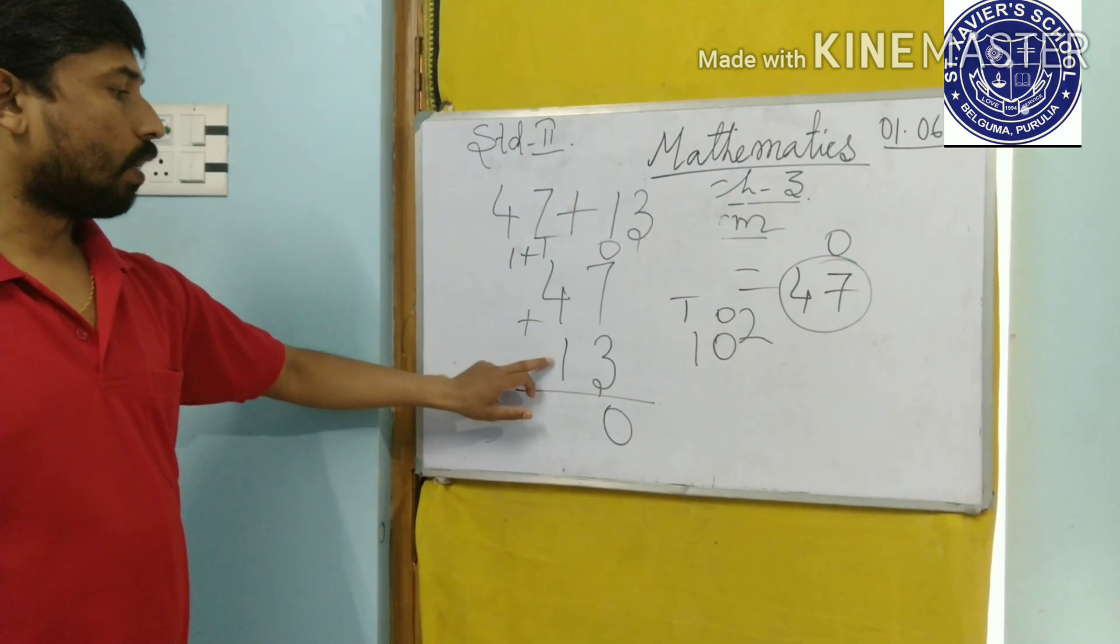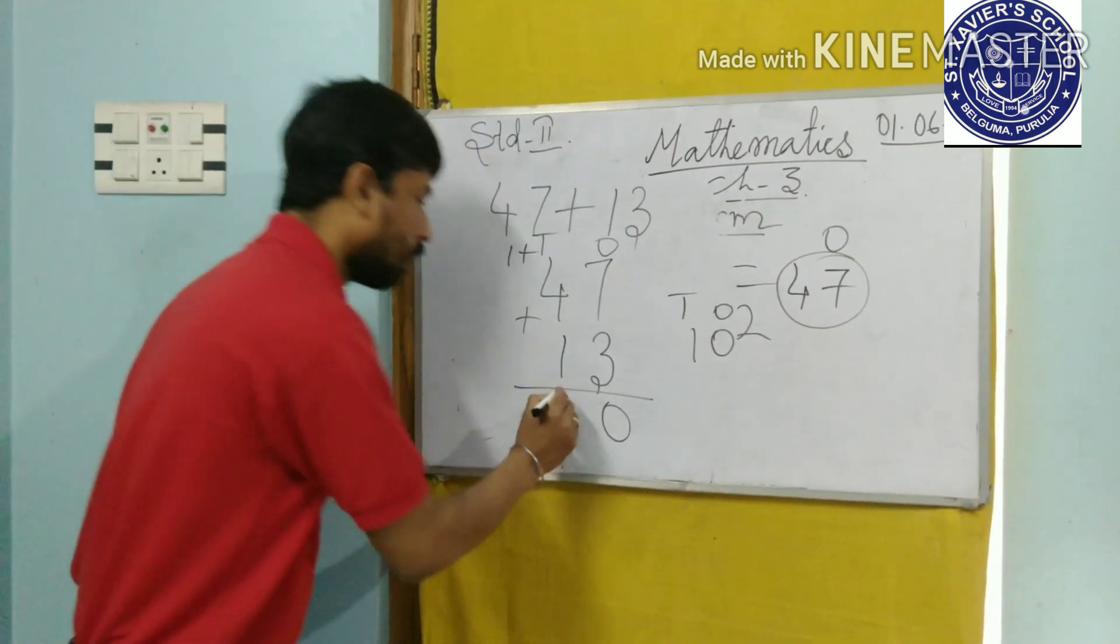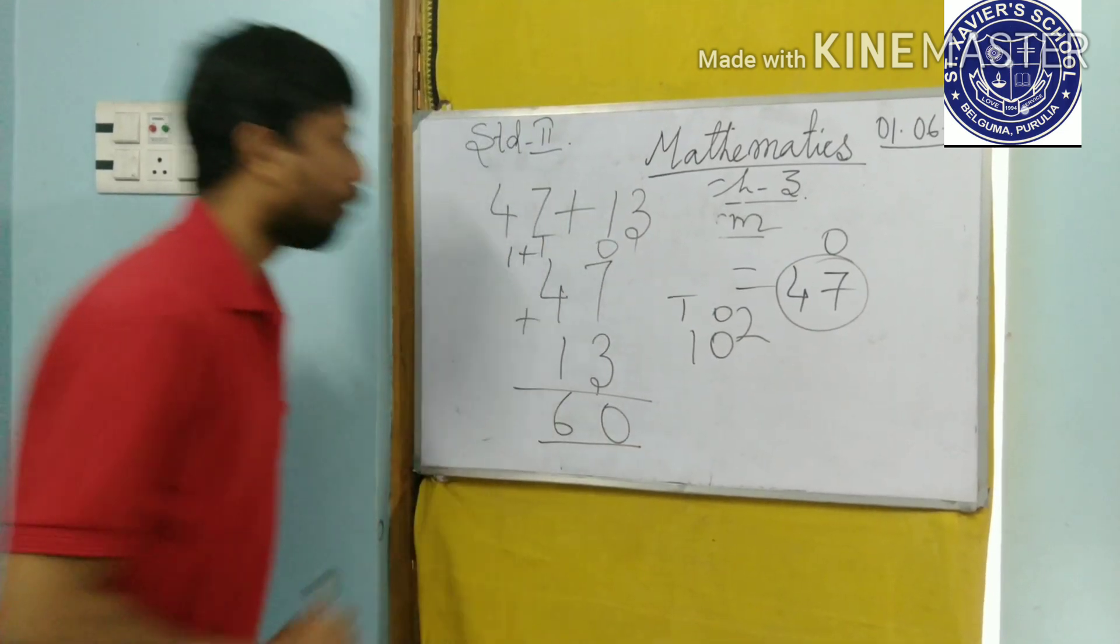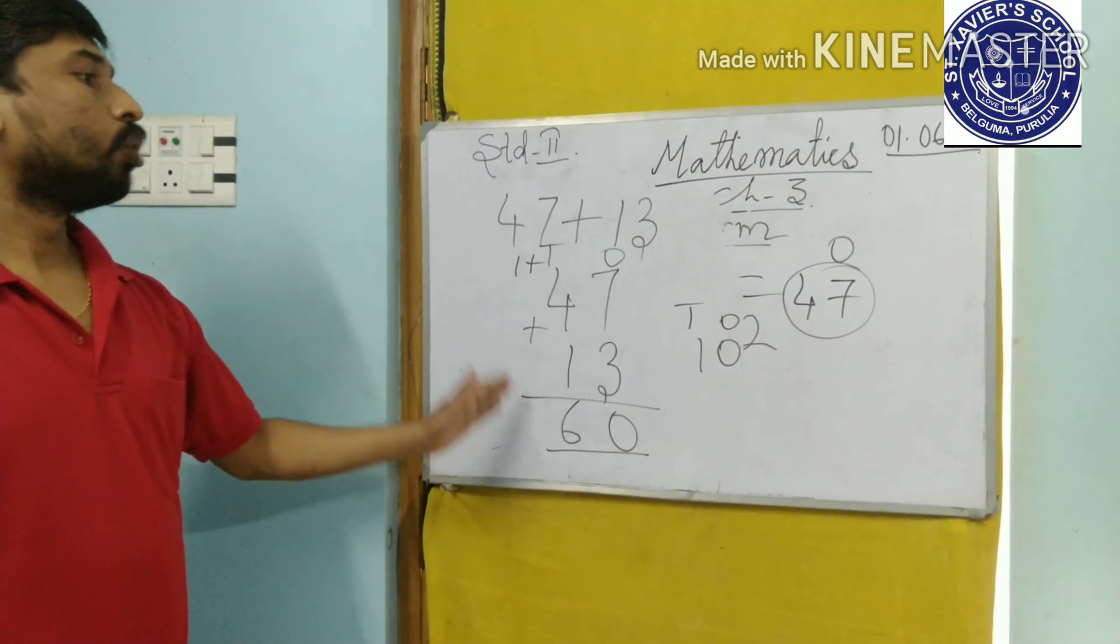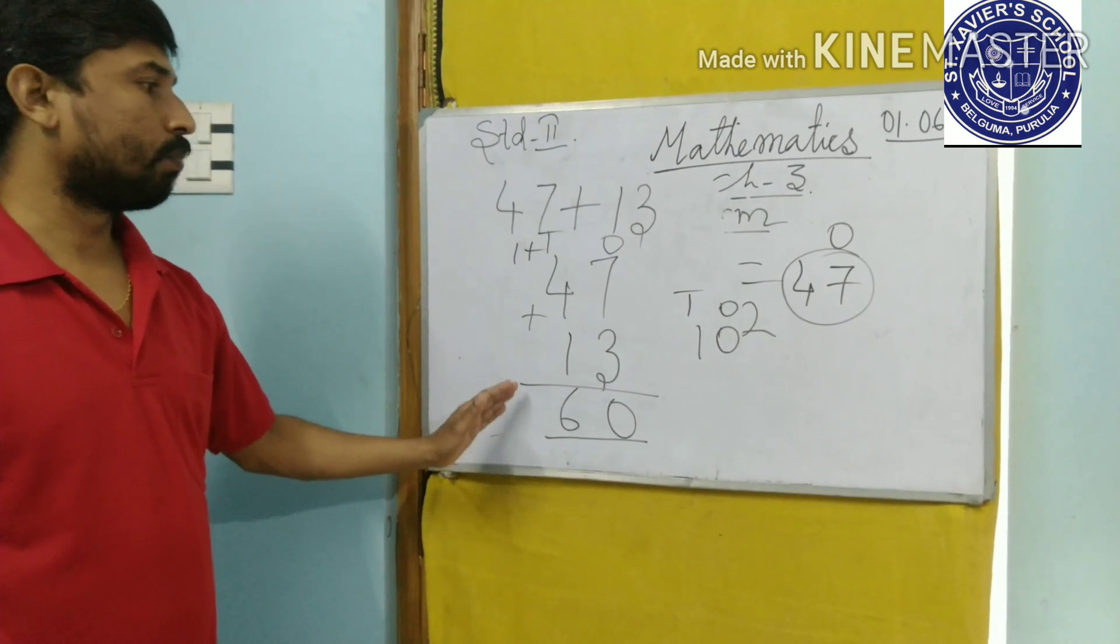Now, add 4 plus 1, 5. Plus 1, 6. So by this way, we can add by arranging in columns.